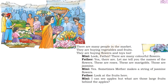Mini sees roses, marigolds, tulips, and more. Father says, 'Yes, there are. Let me tell you the names of the flowers. These are roses, these are marigolds, and those are jasmine.' Mini says, 'Yes, sometimes mother makes a string of jasmine flowers.' Then father says, 'Look at the fruits!'